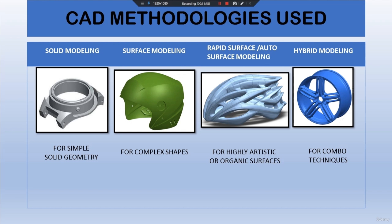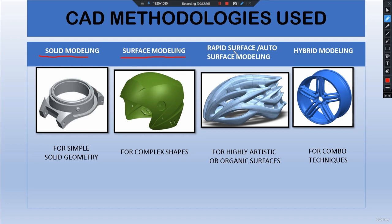The last methodology is hybrid modeling. If we need to perform surface modeling and solid modeling on a single component — that is, using more than one type of modeling on a single component — this is known as hybrid modeling. Techniques can include solid modeling plus surface modeling, surface modeling plus rapid surfacing, or all three combined. In this course, we will focus on solid modeling and surface modeling.